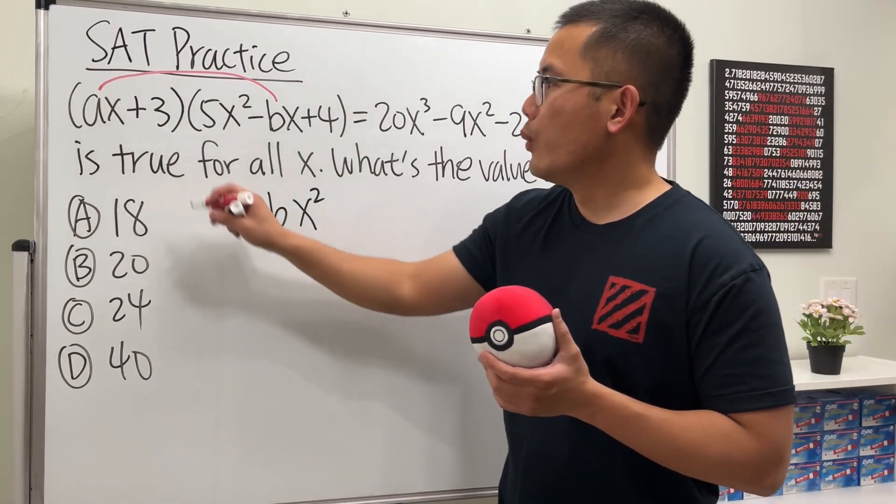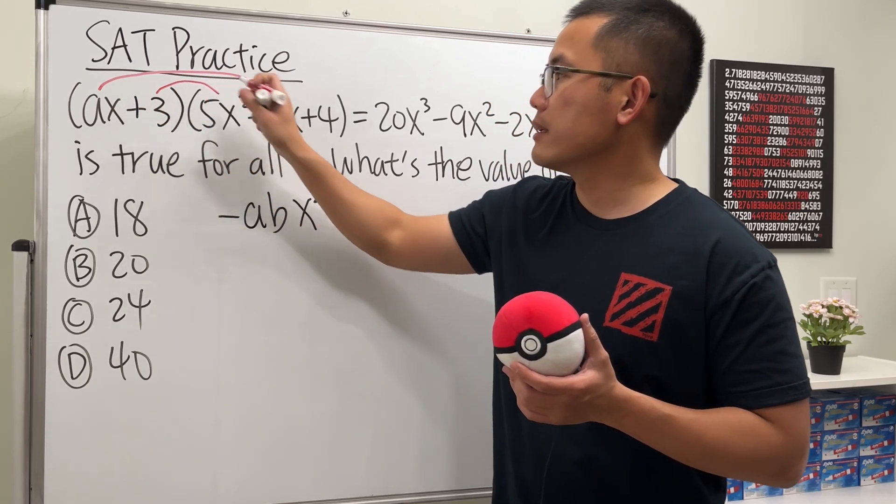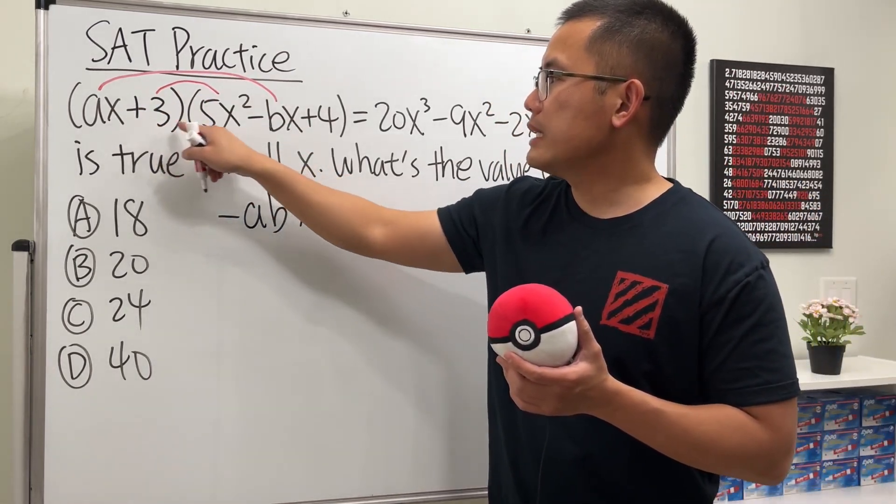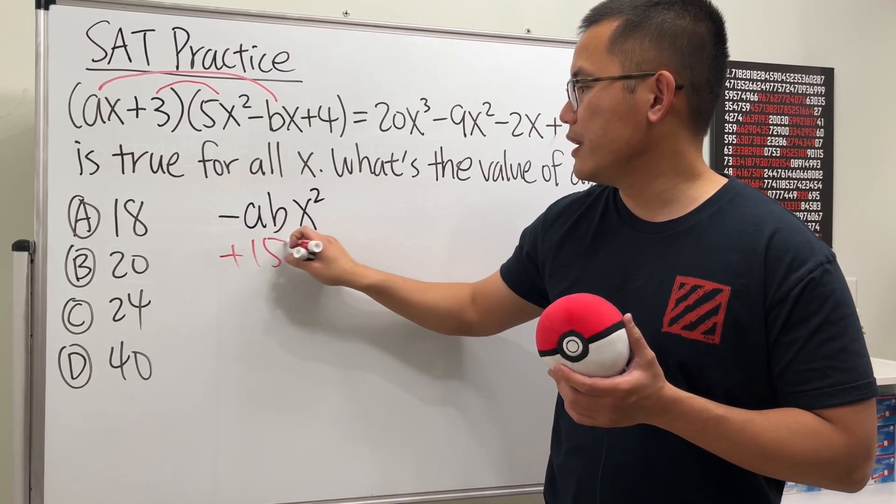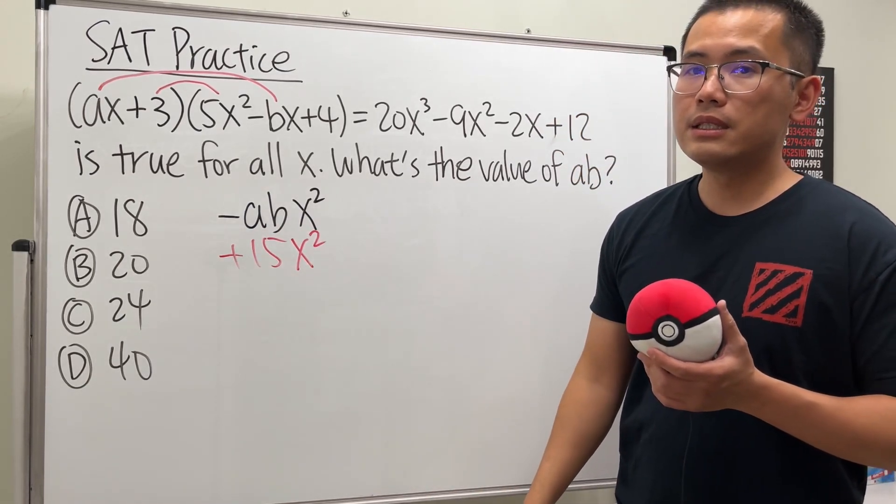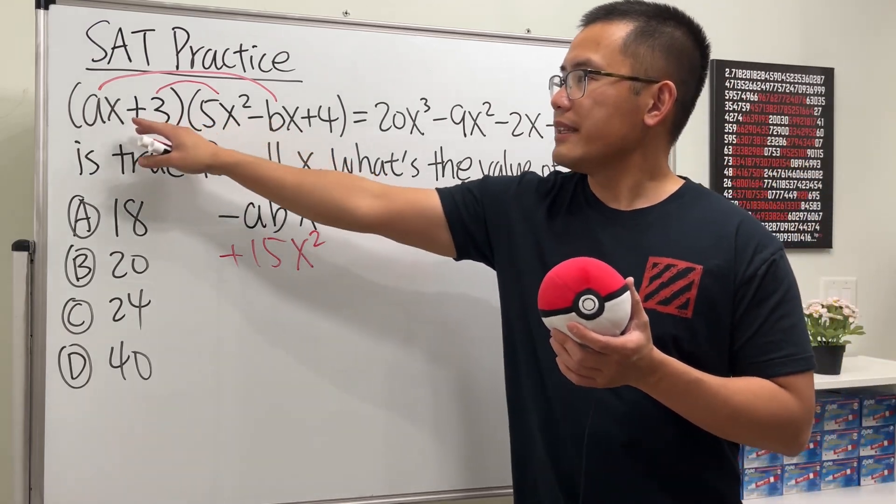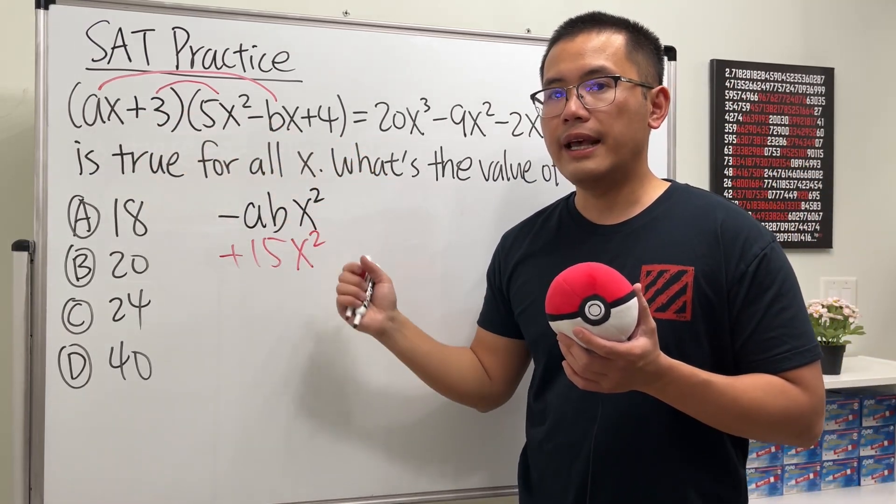And the answer for that is, we will also have to multiply this and that. Because you see, 3 times 5x squared, that will give us a total of plus 15x squared. So, all together, those are the two operations that will give us x squared terms.